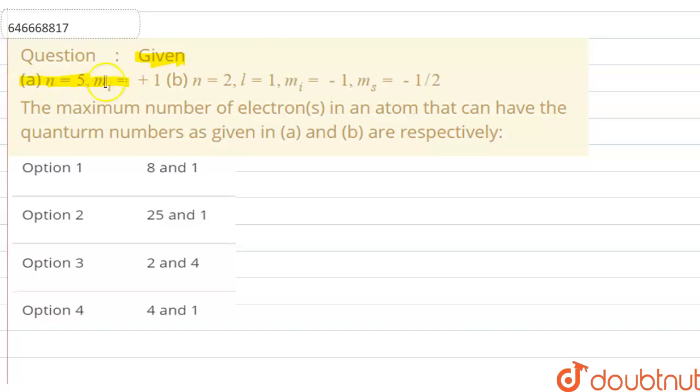Given: (a) part is here, n equals to 5, ml equals to plus 1. (b) n equals to 2, l equals to plus 1, ml equals to minus 1, ms equals to minus 1/2. The maximum number of electrons in an atom that can have quantum numbers as given in (a) and (b) are respectively.